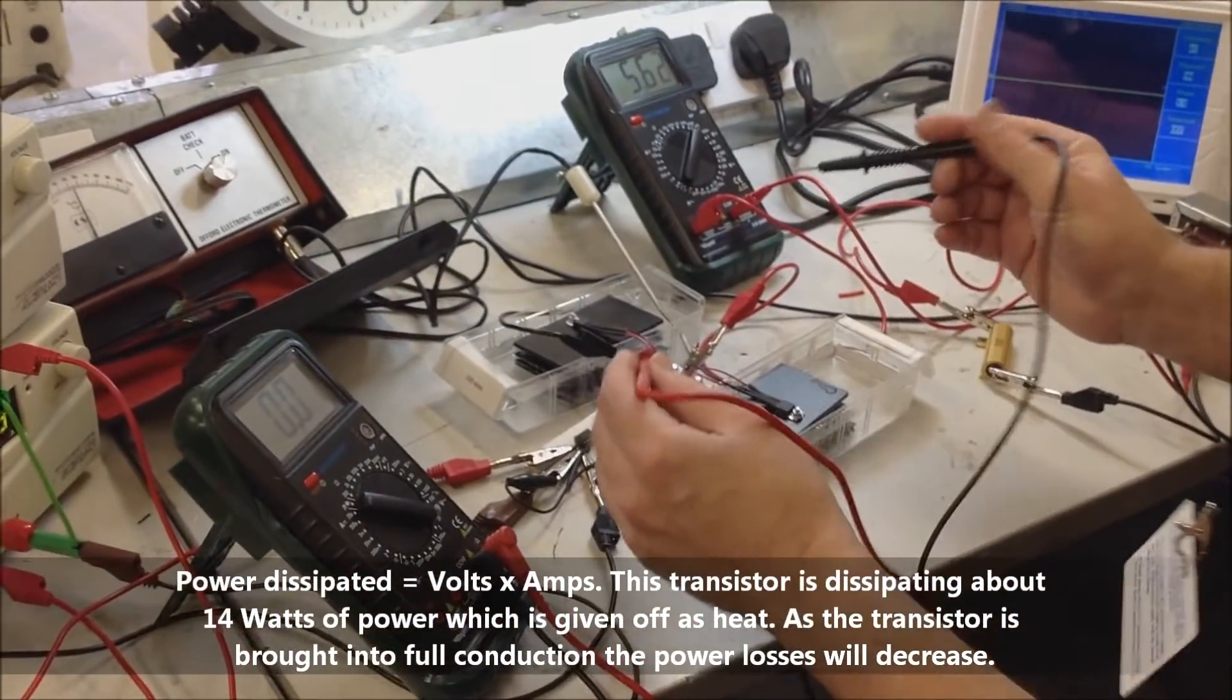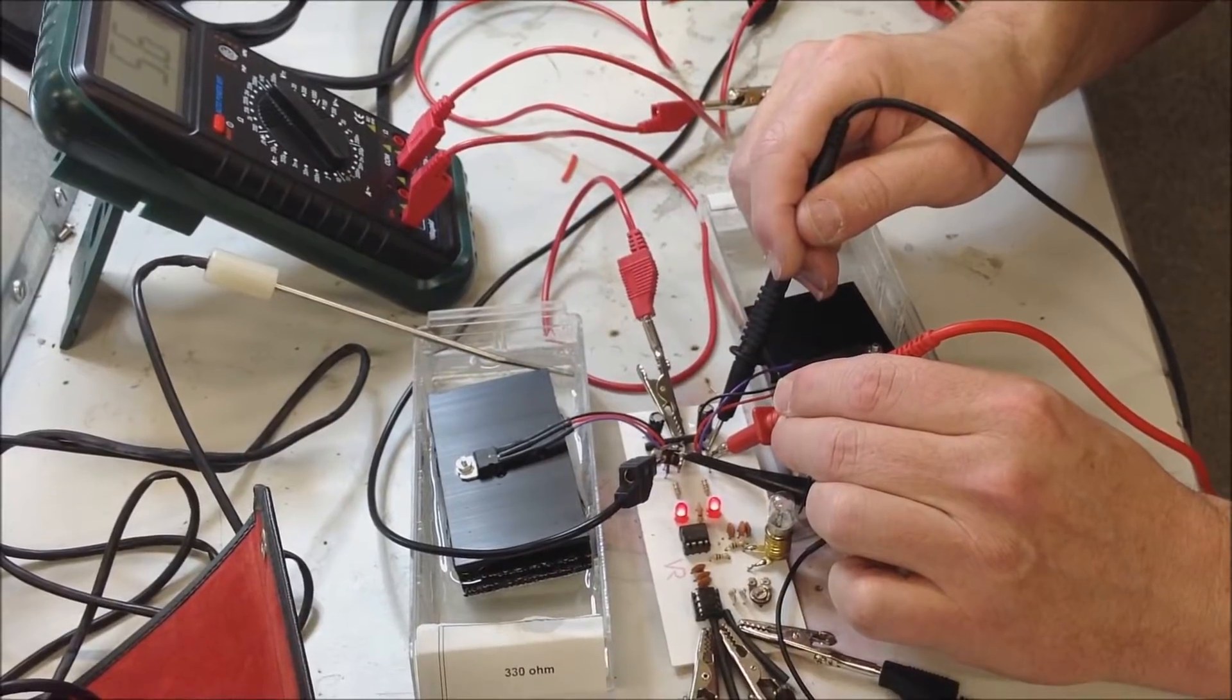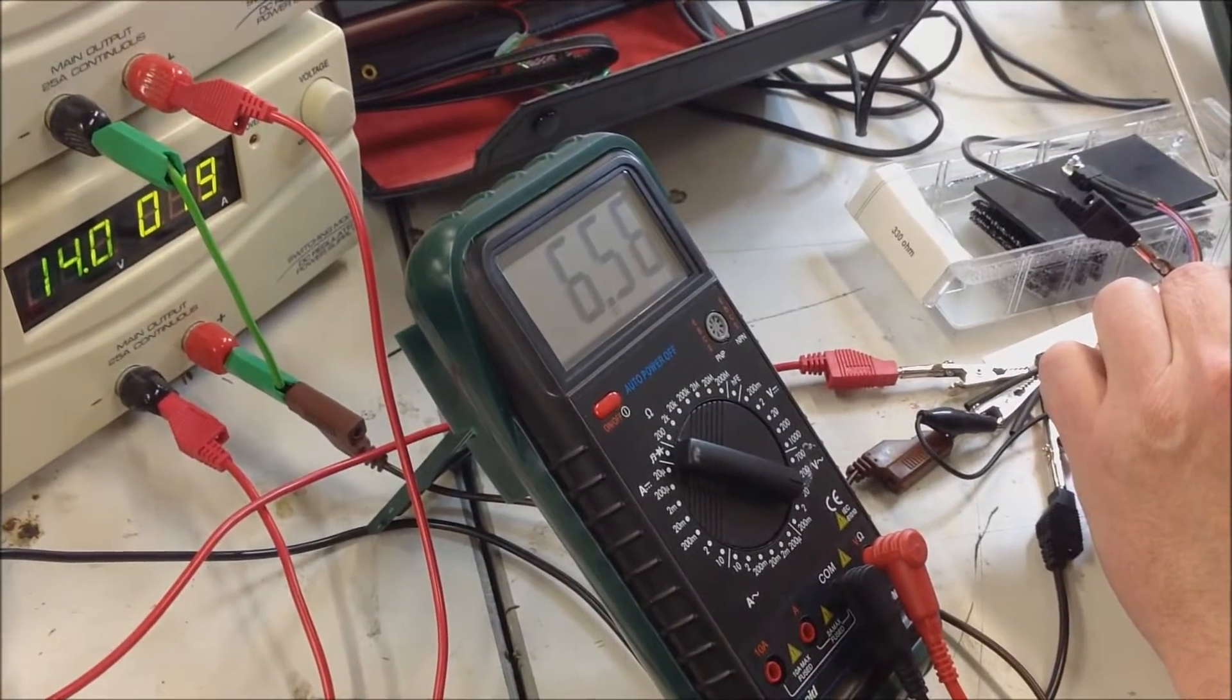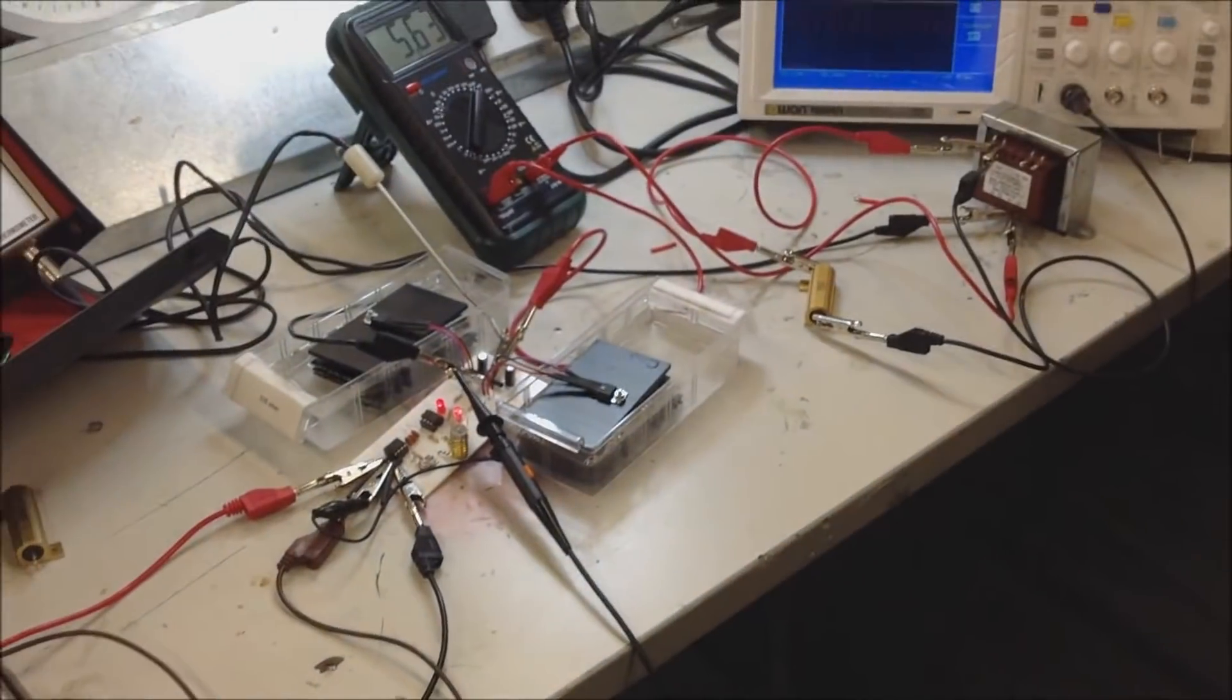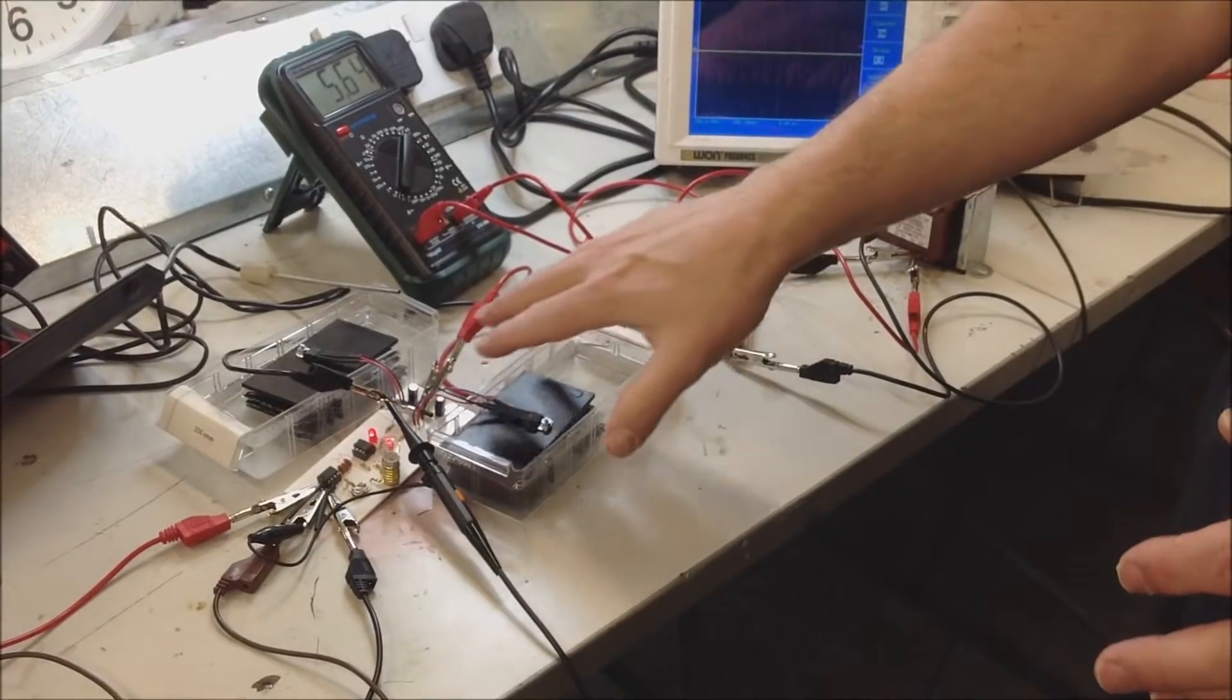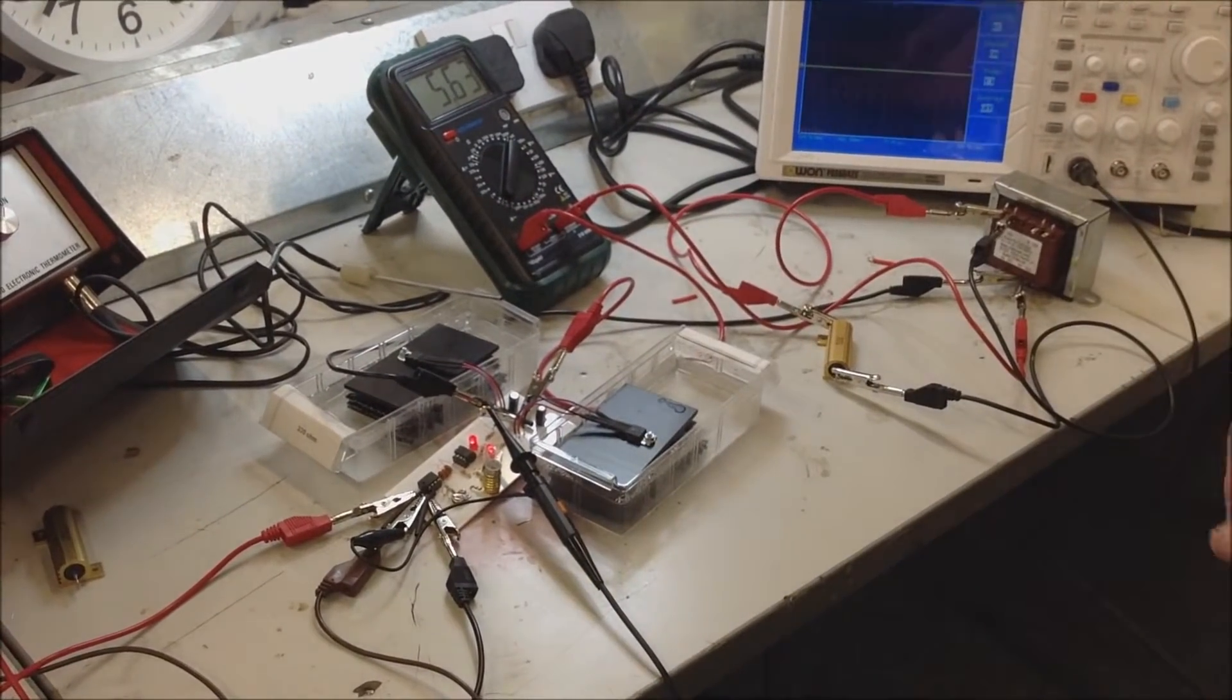Of course I have to do this carefully and measure the voltage between the drain and the source. And if you just look on the dial there you can see it's about 7 volts. So power dissipated is equal to current times voltage. Therefore we've got about 14 watts of power dissipation with this heat sink and this transistor combination.